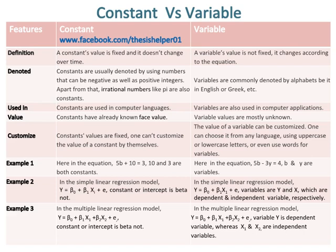Constants are used in computer languages, whereas variables are also used in computer applications. Constants have already known face value, whereas variable values are mostly unknown.